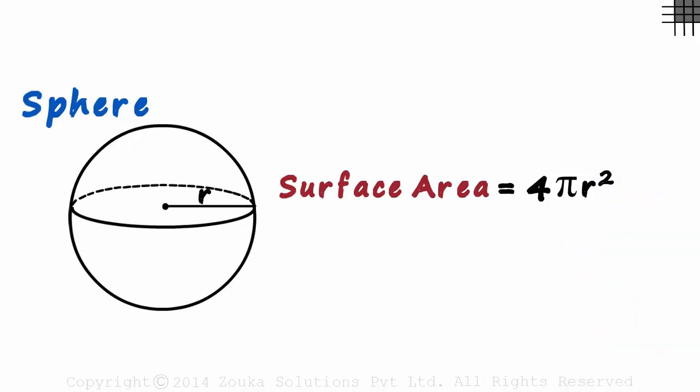A sphere has just one type of surface area. Its total surface area is its curved surface area as it does not have any flat surfaces.